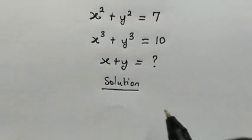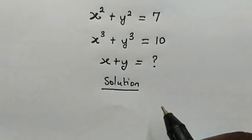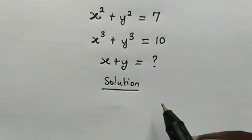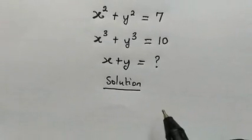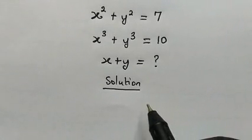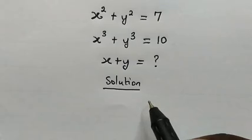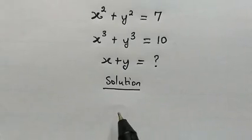Hello, welcome back once again. This is indeed a very nice and interesting Olympiad mathematics problem. We're given that x squared plus y squared is equal to 7, and x cubed plus y cubed is equal to 10. We're going to evaluate x plus y. Let's get started.